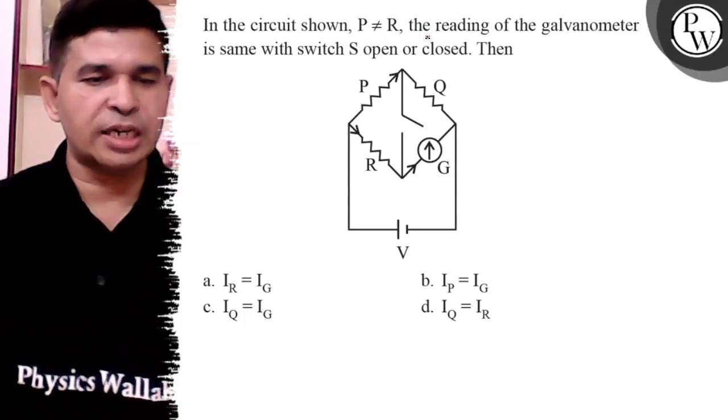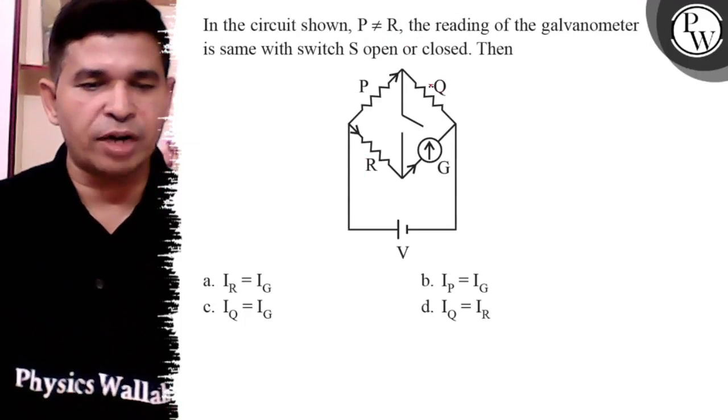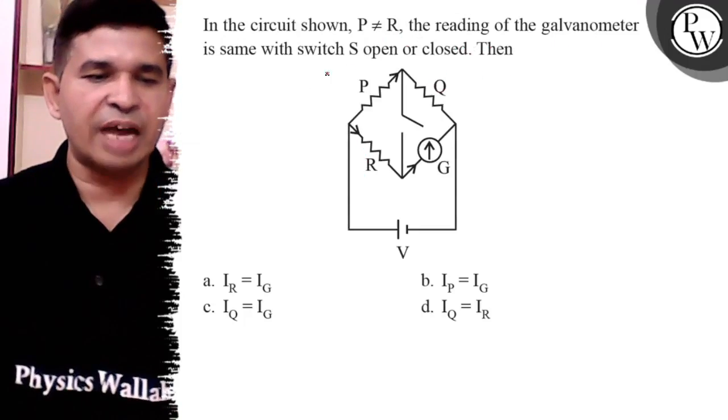Hello Bacho, let us see this question. In the circuit, P is not equal to R and reading of the galvanometer is same.